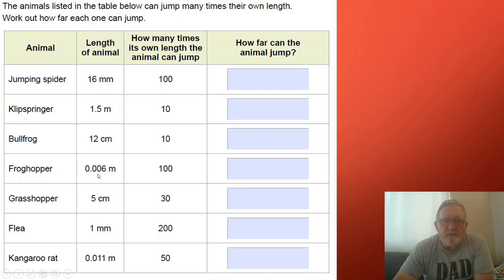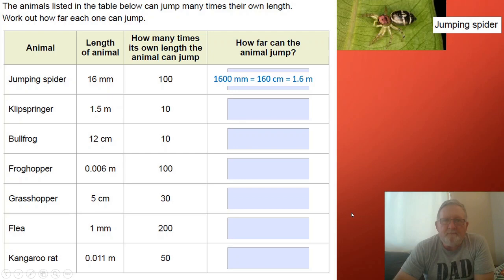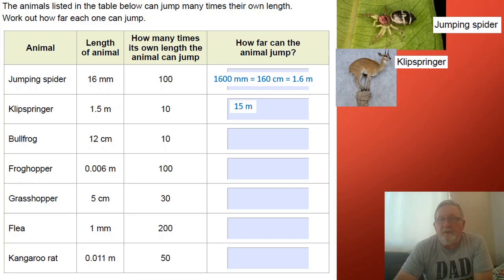Welcome back. You would have noticed that the measures are quite different. There's the jumping spider. If I multiply 16 millimeters by 100, I get 1600 millimeters. You can see the 16 is written in both, two zeros because it was multiplied by 100 have been placed here. 1600 millimeters is 160 centimeters or 1.6 meters. That's a fairly decent jump for a little spider.